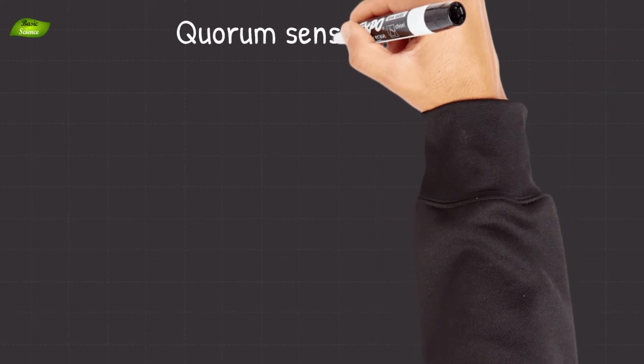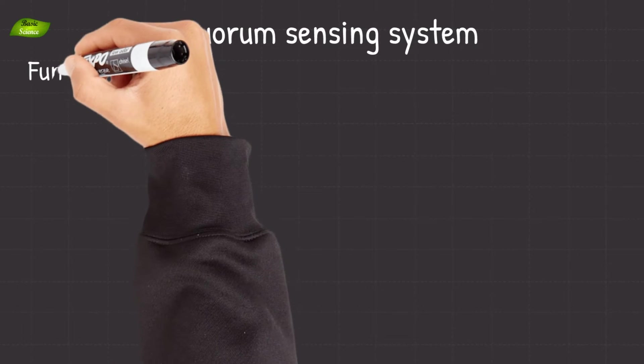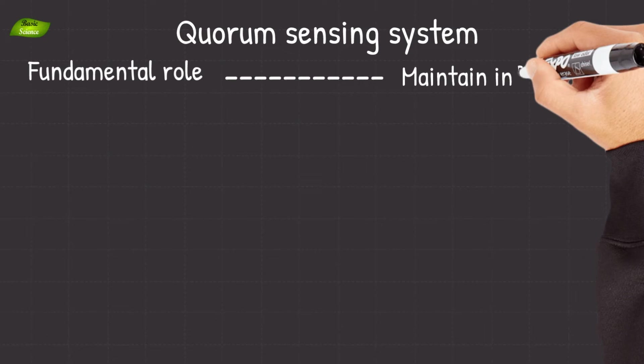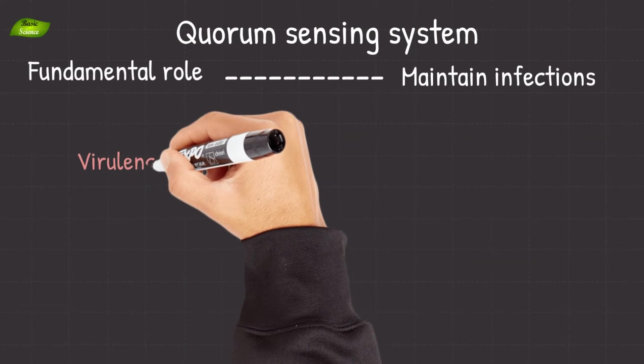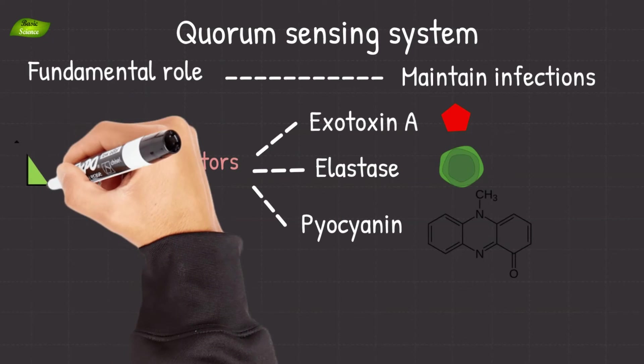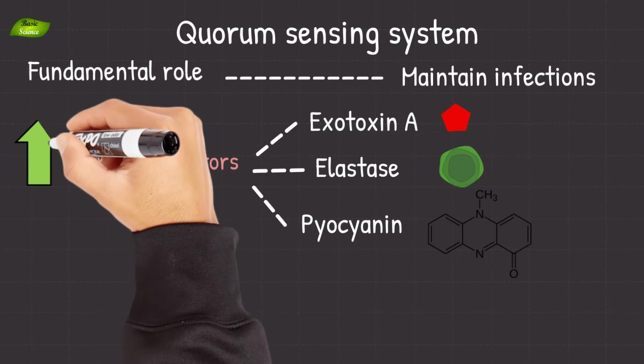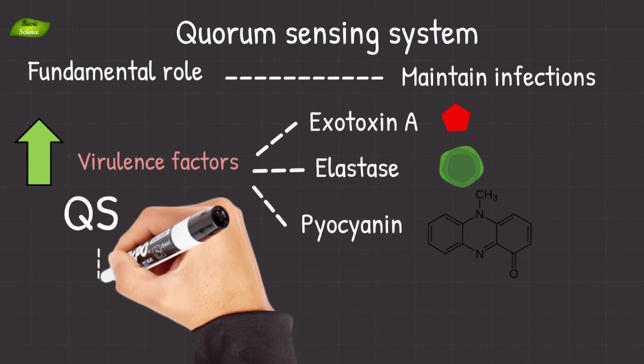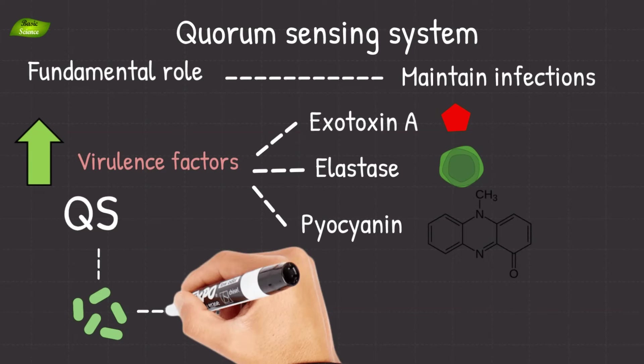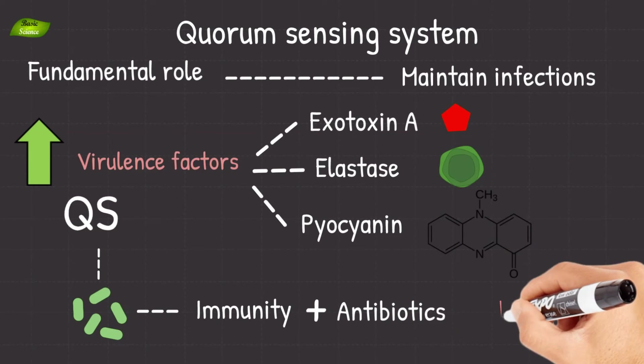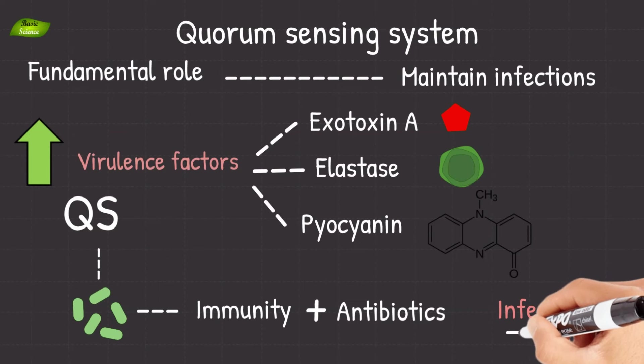The quorum sensing system plays a fundamental role in Pseudomonas aeruginosa's ability to establish and maintain infections. By coordinating the expression of virulence factors such as exotoxin A, elastase, and piocinin, it enhances its pathogenic potential. Additionally, quorum sensing is implicated in the formation of biofilms, which provide protection against host immune responses and antimicrobial agents, contributing to the chronic and persistent nature of infections.